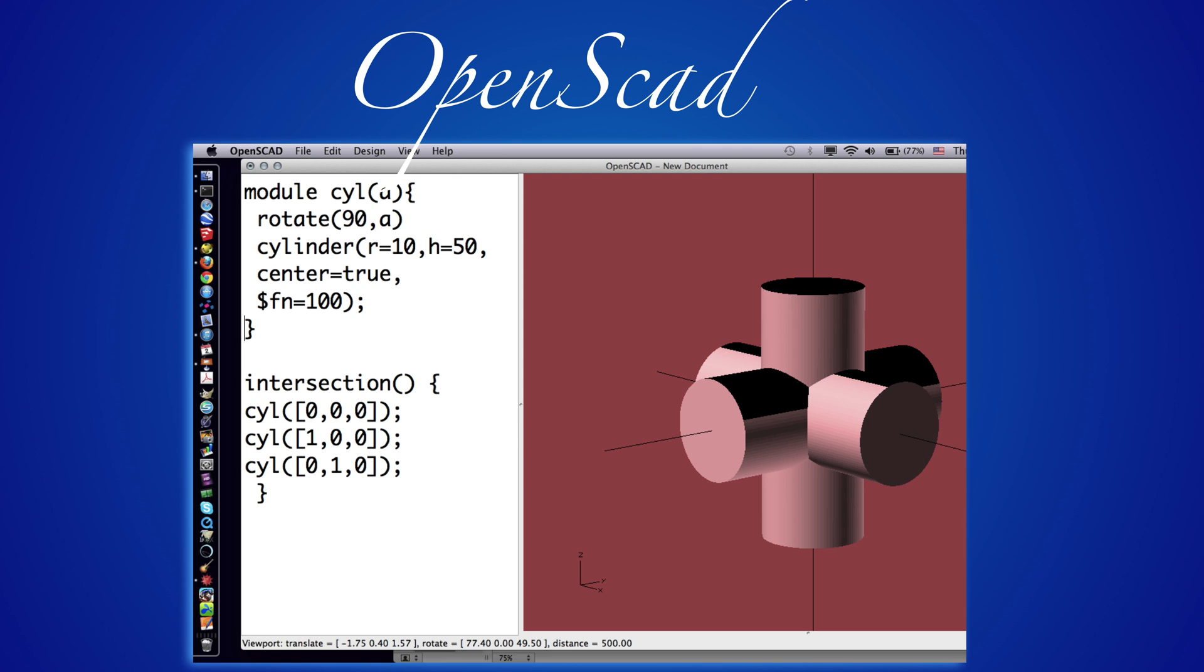But it doesn't have to be a computer algebra system, a lightweight, self-contained, but extremely powerful free software is OpenSCAD. So this language describes objects mathematically and allows Boolean operations, for example, between various geometric objects, allowing with a few lines to generate complex objects.